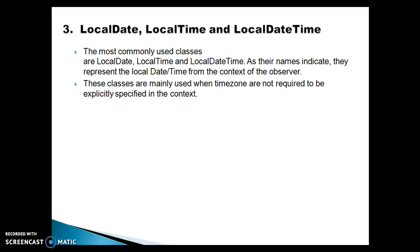In the java.time package, which is part of JDK 1.8, the most commonly used classes are LocalDate, LocalTime, and LocalDateTime. As their names indicate, they represent the local date and time from the context of the observer. These classes are mainly used when time zones are not required to be explicitly specified in the context.